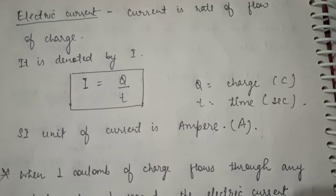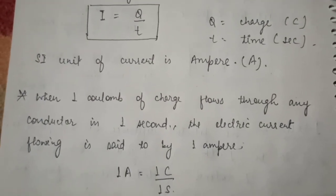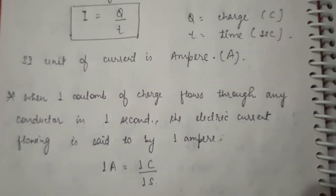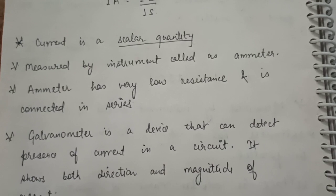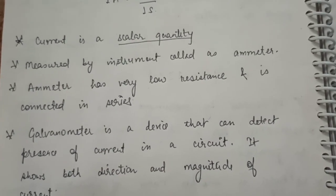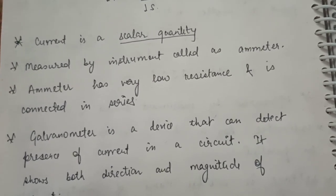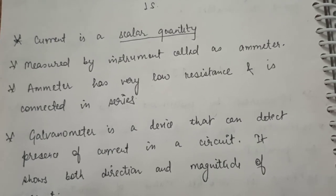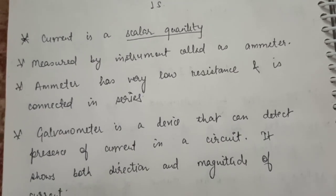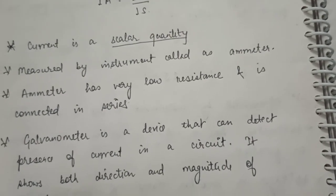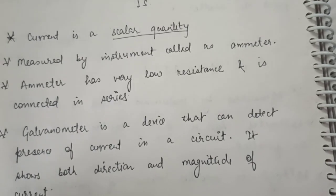The SI unit of current is ampere, denoted by capital A. One ampere is defined as one coulomb of charge flowing through a conductor in one second. Current is a scalar quantity. Although current flows in a direction, the direction is not fixed because you can twist the wire — unlike vectors, which have a fixed coordinate from an axis. Although the magnitude stays the same, the direction can change, so current is scalar.